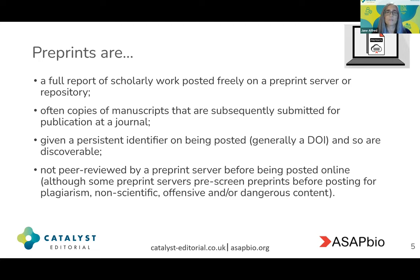So what are preprints? Preprints are a full report of scholarly work that's posted freely on a preprint server or repository. They're often copies of manuscripts that are subsequently submitted for publication at a journal, and they're given a persistent identifier when they're posted. This is often a DOI — a digital object identifier — that makes a preprint discoverable. They're not peer reviewed by a preprint server before being posted online, but some preprint servers do run preprints through some basic checks, for example to check for plagiarism and for offensive or dangerous content.